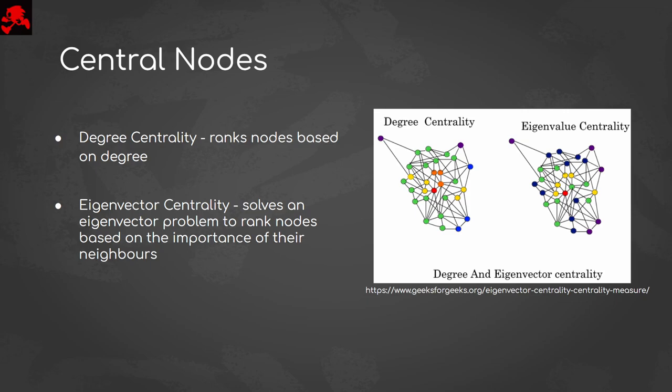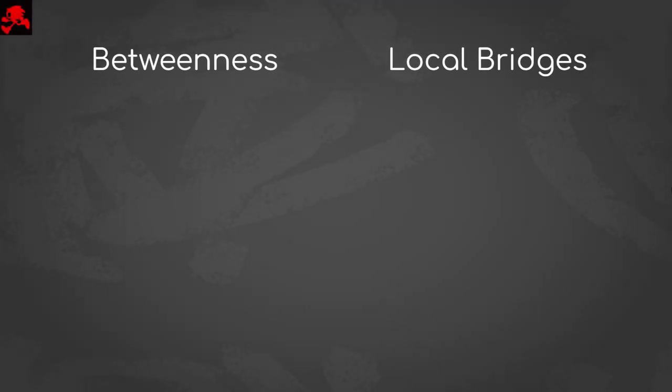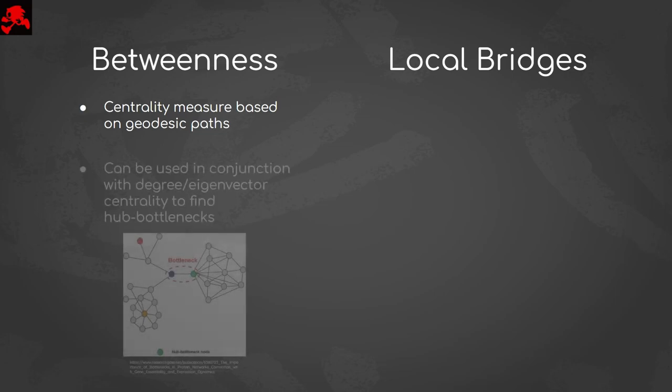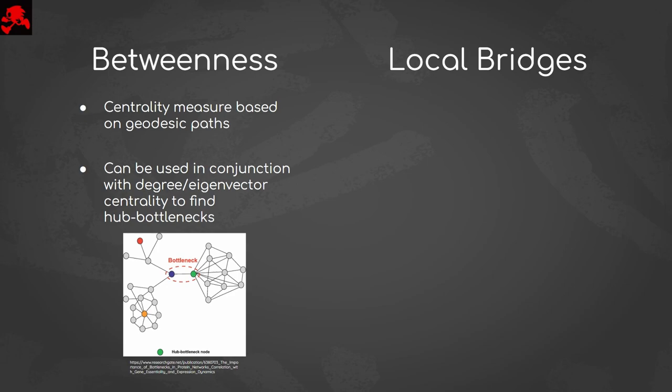Once a functionally relevant cluster has been found, we need a way to change or limit its function by cutting it off from the flow of information. Two methods to achieve this are betweenness centrality and local bridges. Betweenness centrality ranks nodes based on the number of geodesic paths they can be found in. By finding nodes that have both high betweenness and high degree slash eigenvector centrality scores, we hope to find the bottleneck proteins whose removal could severely limit the function of particular nodes or communities.